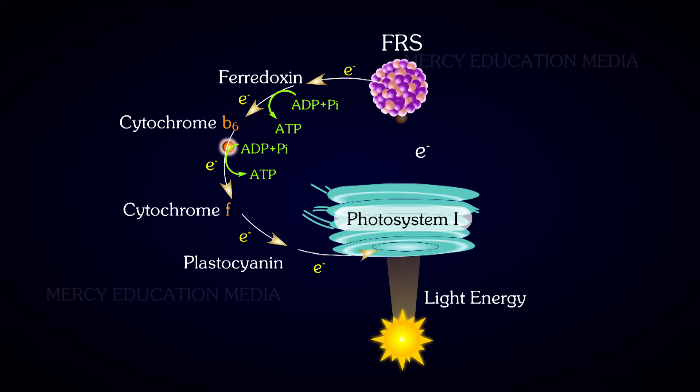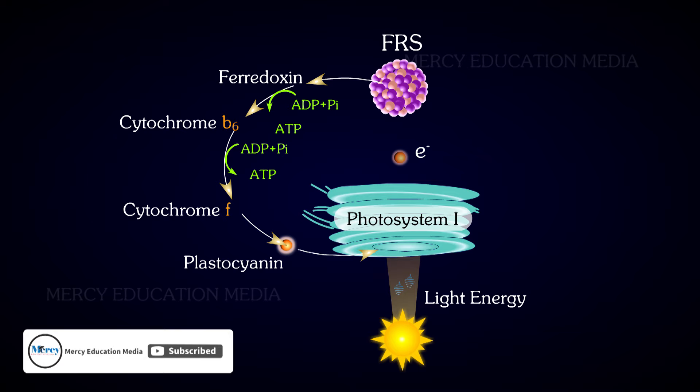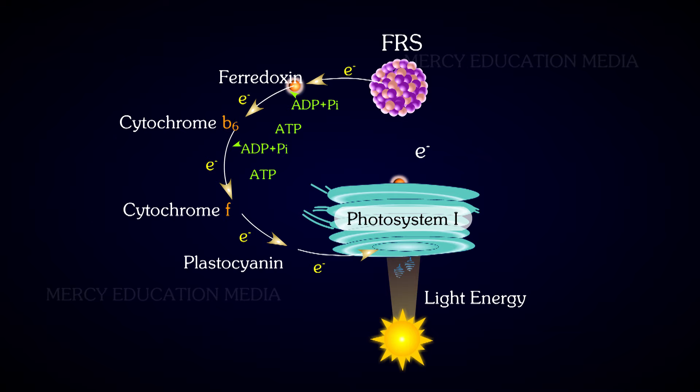During this transport of electrons, two phosphorylations take place: one between ferredoxin and cytochrome B6, and the other between cytochrome B6 and cytochrome F. Thus, two ATP molecules are produced in this cycle.